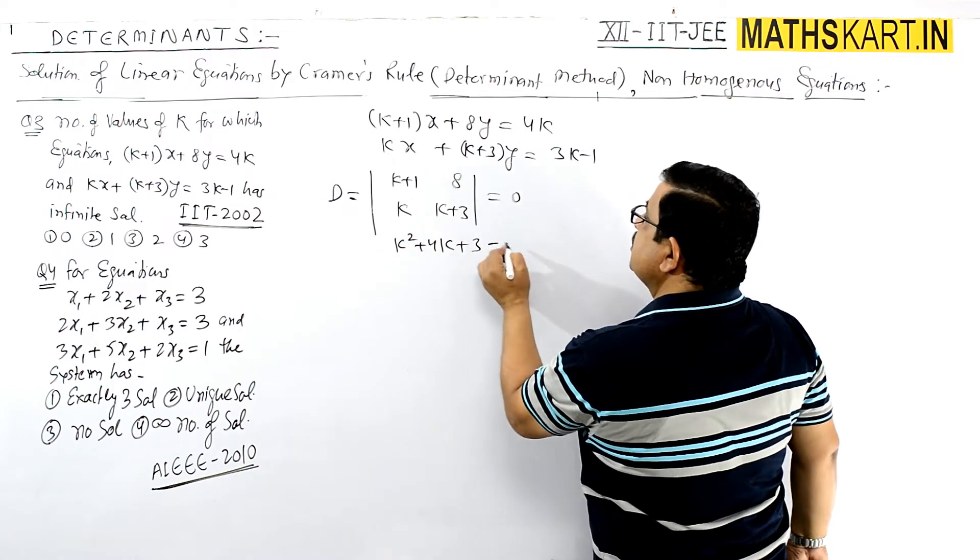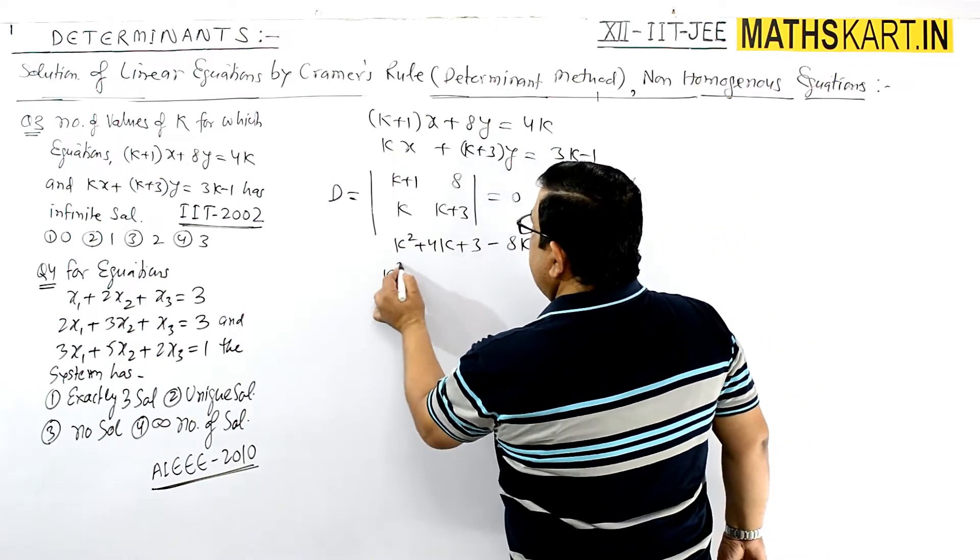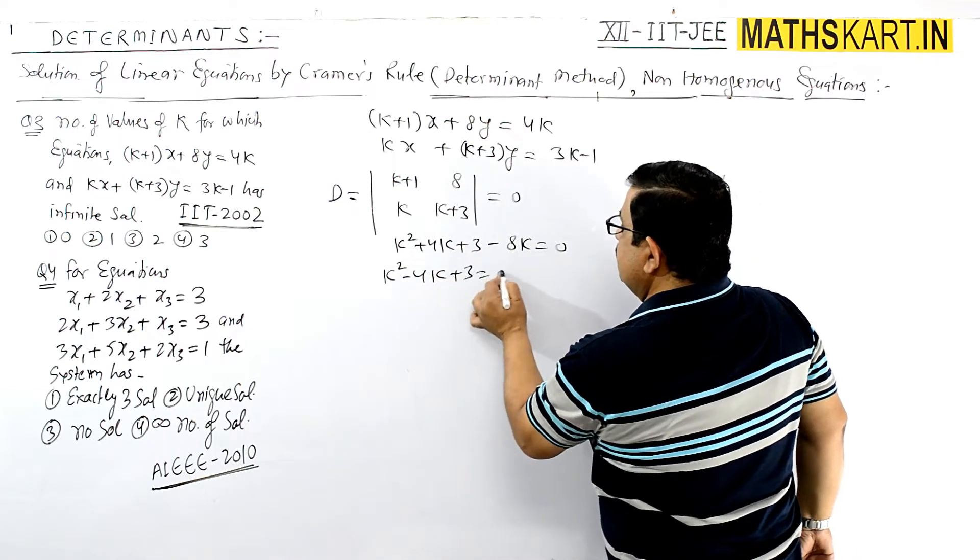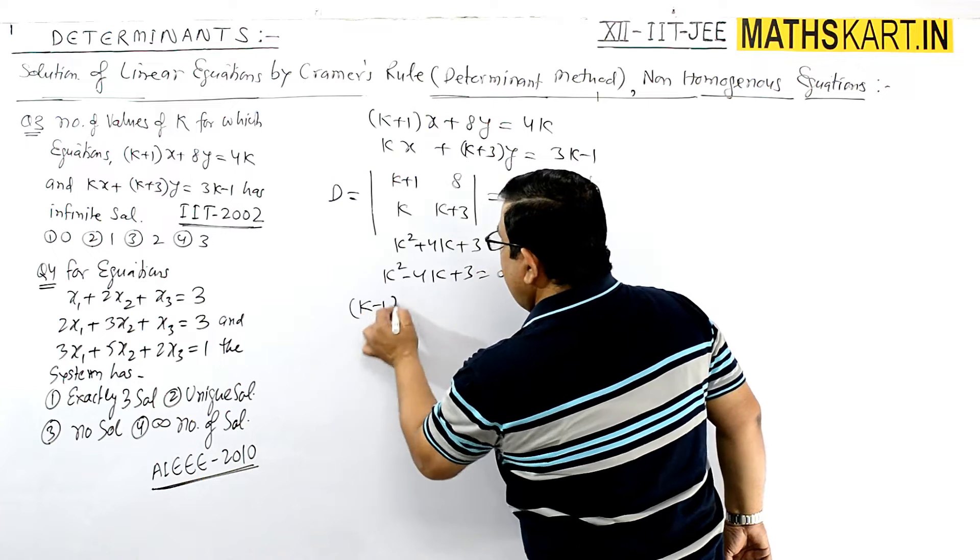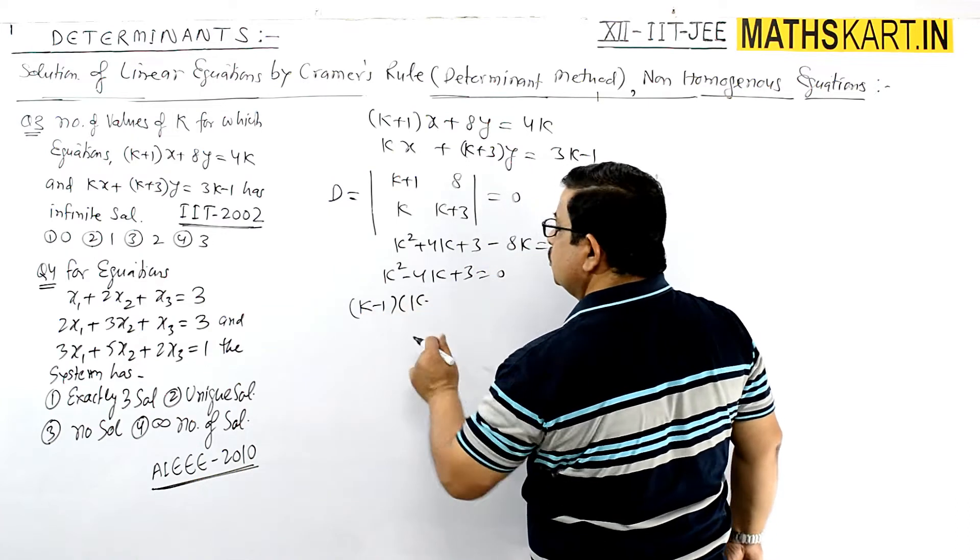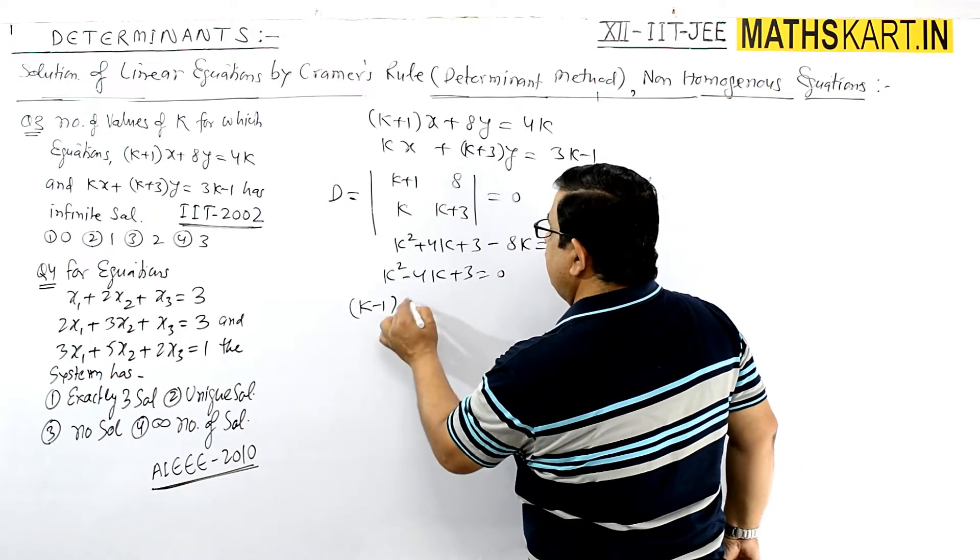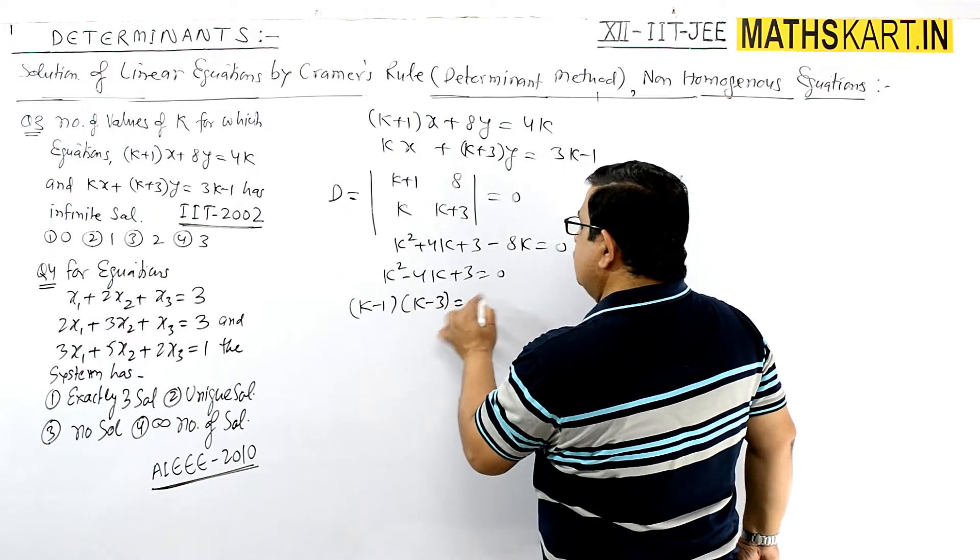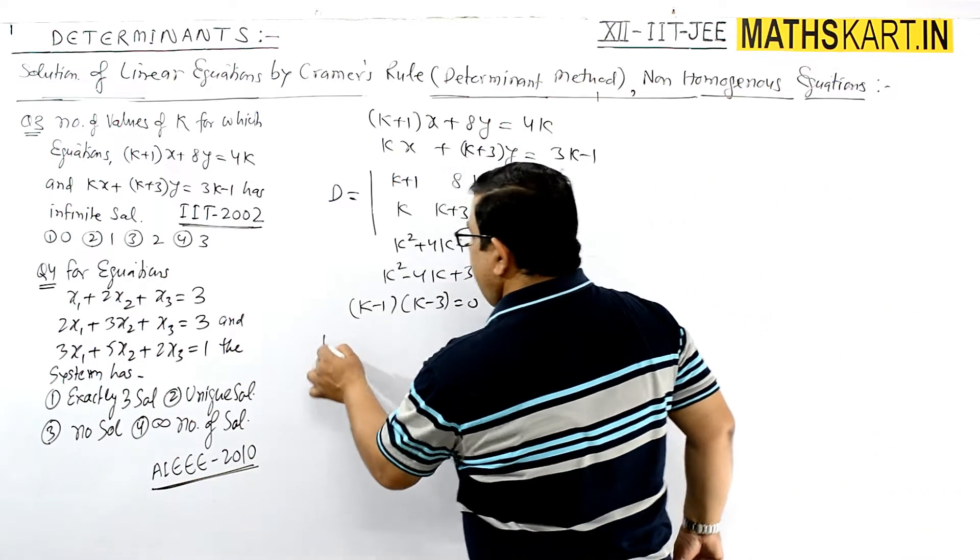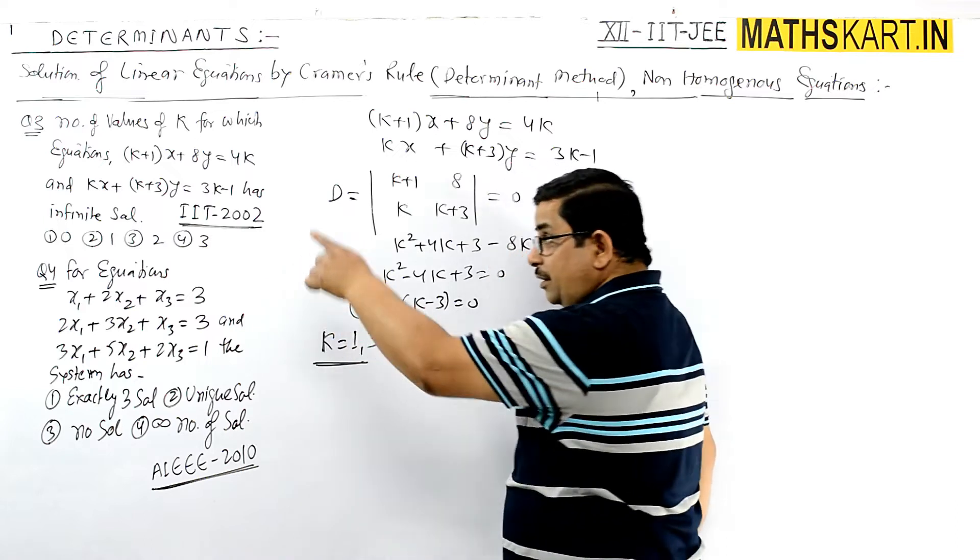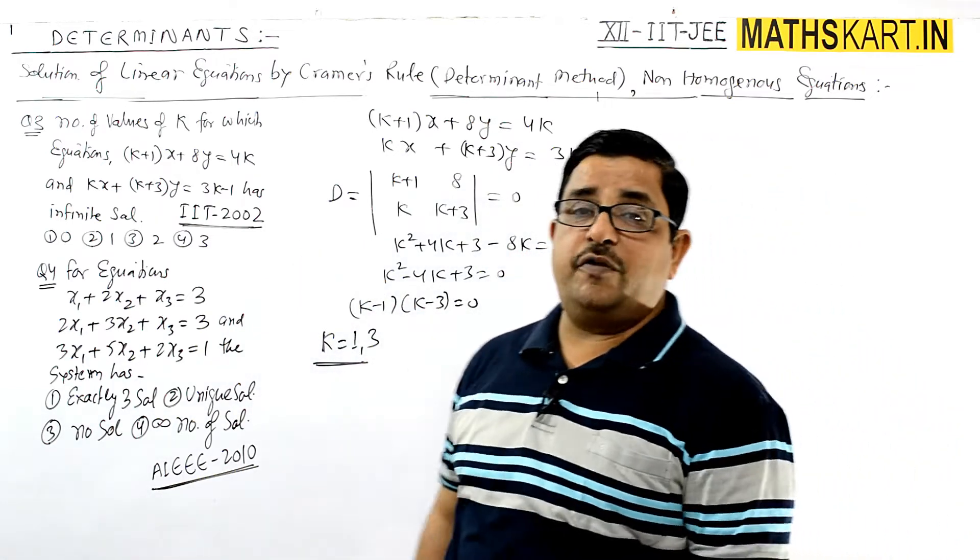Factoring: (k-1)(k-3) = 0, giving k = 1 or k = 3. There are two values of k from this condition, but we need to check the other conditions as well.